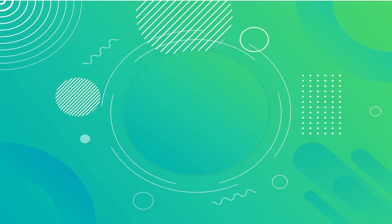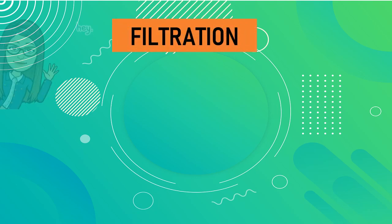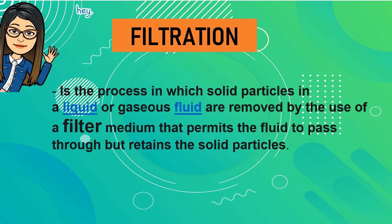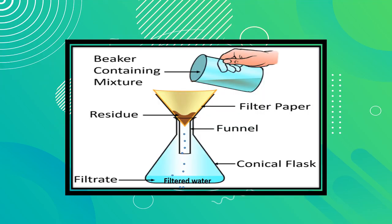Another way of separating a mixture is by means of filtration. Filtration is the process in which solid particles in a liquid or gaseous fluid are removed by using a filter medium that permits the fluid to pass through but retains the solid particles. Using filter paper and a funnel, you can separate a mixture such as tap water. The dirt remains on the filter paper as the residue, and the clean water — the filtrate — passes through to the bottom of the container.